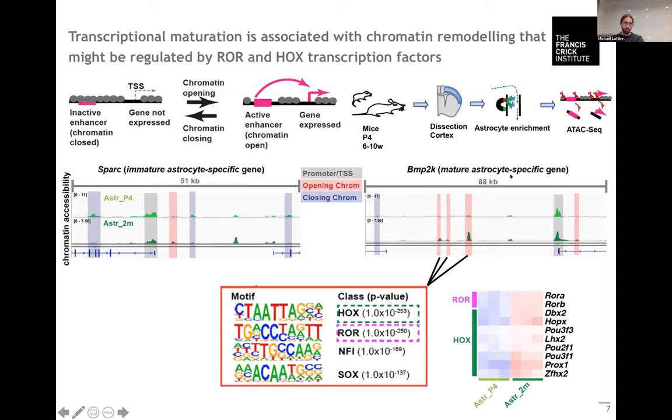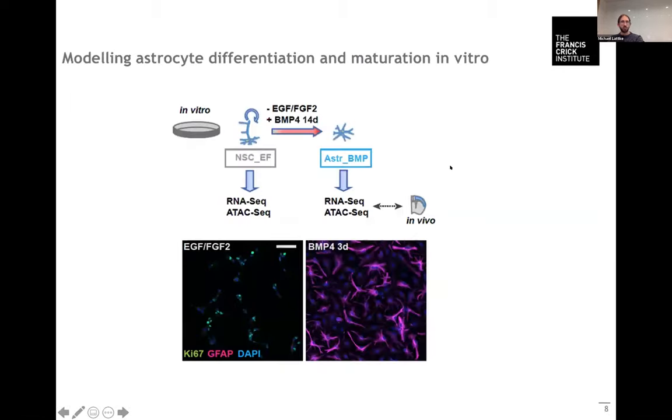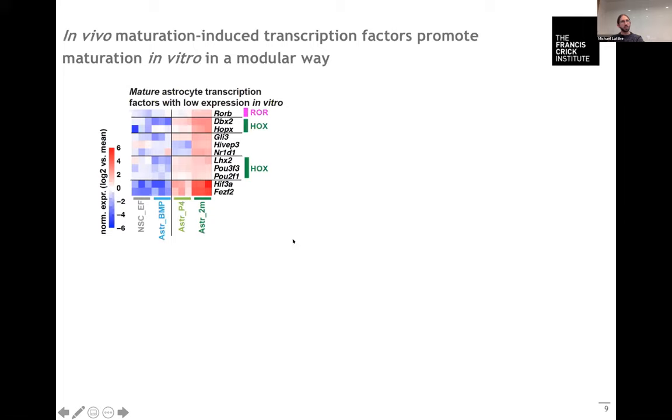To study this in more detail we switched to an in vitro model where we differentiate astrocytes from cultured neural stem cells using BMP4 and growth factor withdrawal. These astrocytes express astrocyte markers but from the transcription profile they remain at least partially immature, and among these genes that are not prominently induced are several transcription factors.